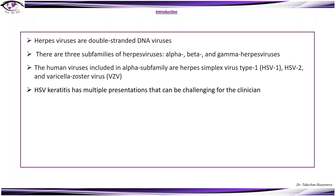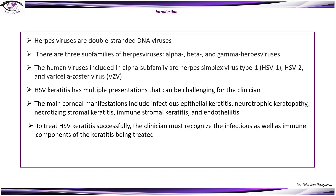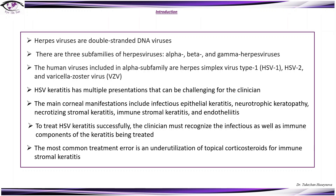HSV keratitis has multiple presentations that can be challenging for the clinician. The main corneal manifestations include infectious epithelial keratitis, neurotrophic keratopathy, necrotizing stromal keratitis, immune stromal keratitis, and endothelitis. To treat HSV keratitis successfully, the clinician must recognize the infectious as well as immune components of the keratitis. The most common treatment error is an underutilization of topical corticosteroids for immune stromal keratitis.